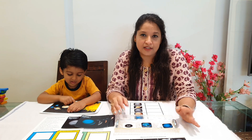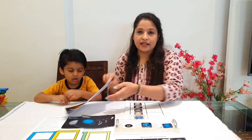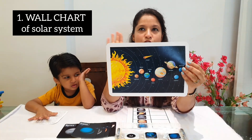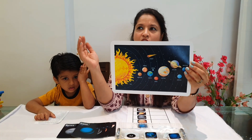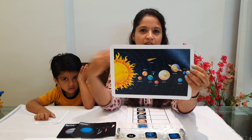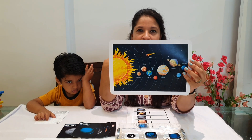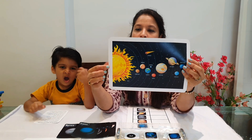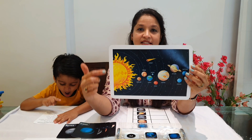Let's get this video started. The first item in this kit is a wall chart. You can stick it to your cupboard or anywhere your child passes by during the day, so they can see it and grasp the information. Let your child explore it again and again. This chart shows the entire solar system.